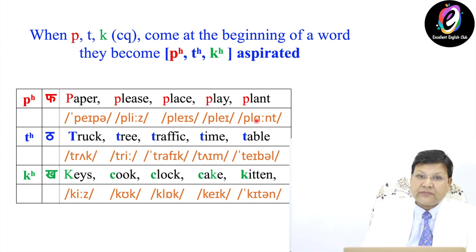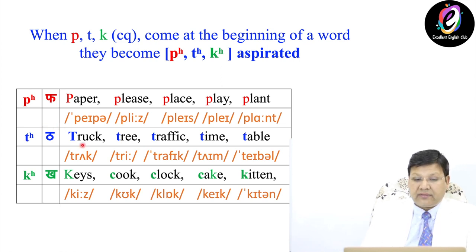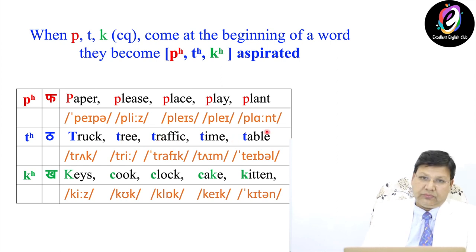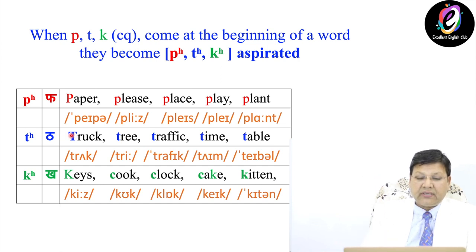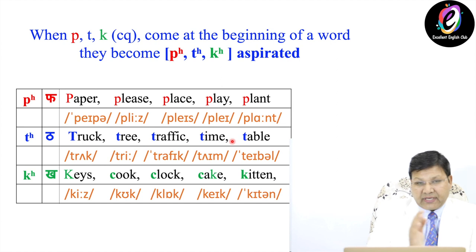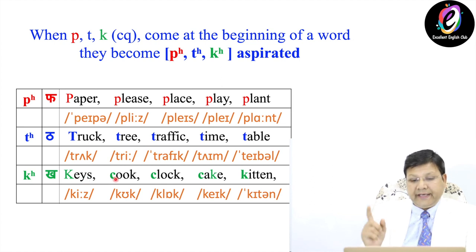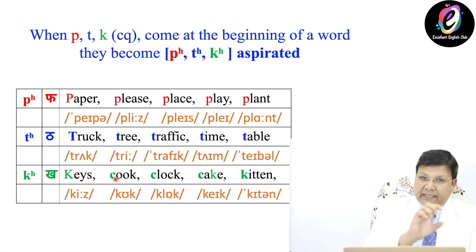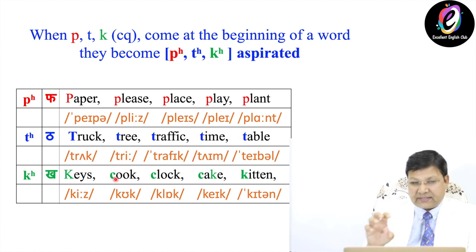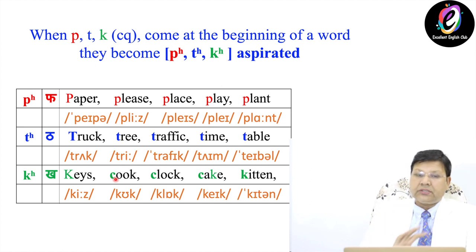The second sound is Ta — in truck, tree, traffic, time, table. Again, you can see that there is a blue color and Ta everywhere is coming at the beginning. The third example is Ka — as in key, cool, clock, cake, kitten. In orange color, these are the sounds, or you can see the pronunciation of these words.